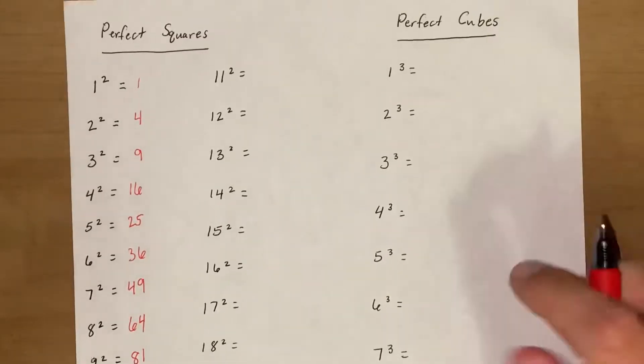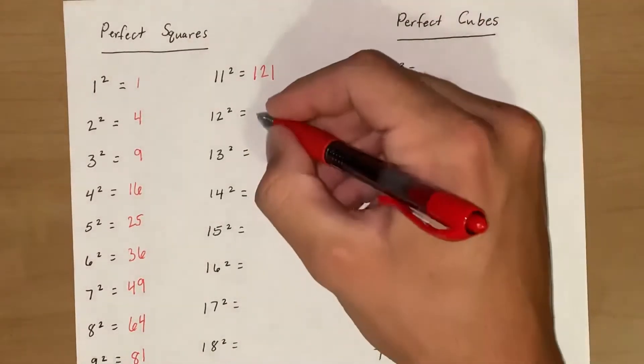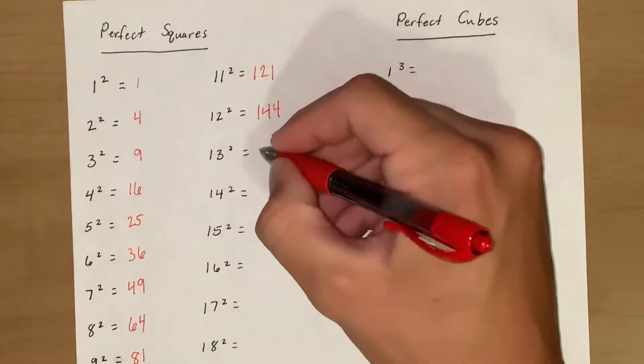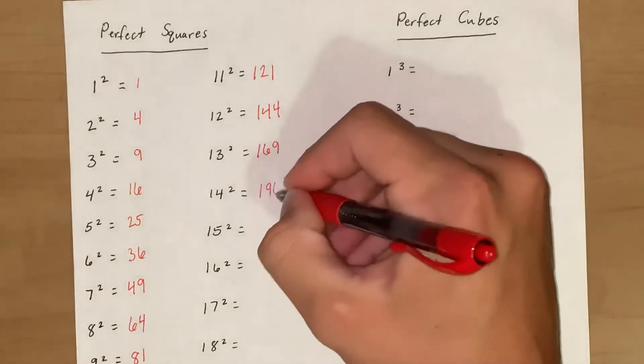Okay so go back up here to 11. 11 squared would be 121, 12 squared 144, 13 squared 169, 14 squared 196.